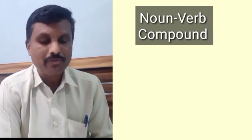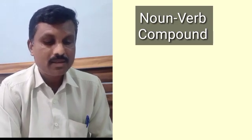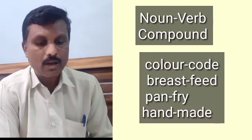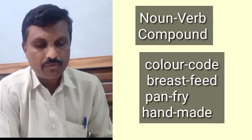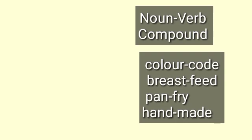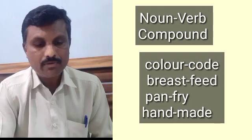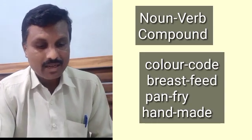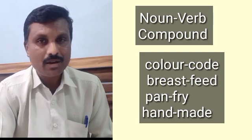Noun-verb compounding is the process where a noun combines with a verb. Examples include: color code, breast feed, chain smoke, pan fry, and handmade. 'Breast' is a noun and 'feed' is a verb. 'Color' is a noun and 'code' is a verb. 'Chain' is a noun and 'smoke' is a verb. 'Pan' is a noun and 'fry' is a verb. This is noun-verb compounding.